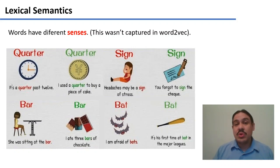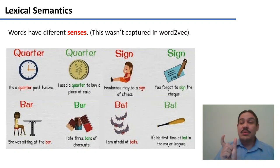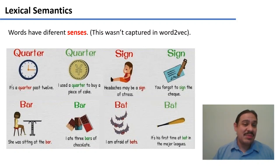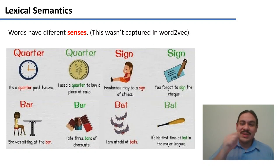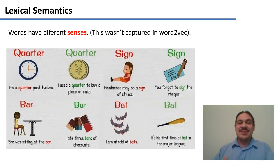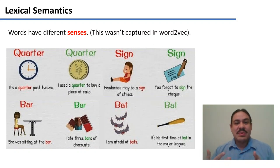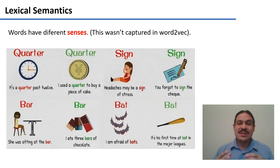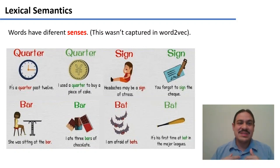For example, when we did word2vec, we didn't distinguish between meanings of a word — we thought that whenever we saw the word 'quarter,' it would always be equivalent. But we know this is not true. A quarter can be a time, like quarter past 12, or a quarter as a coin. A headache may be a sign of stress, or you might need to sign a check. A bat can be the flying mammal, or it can be what you use in baseball. We might need the computer to know this so that it can figure out whether we're talking about time or a coin when it sees the word 'quarter.'